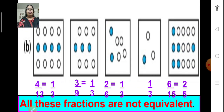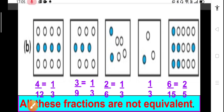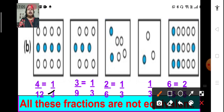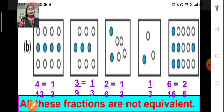Here, in the first figure, 4 out of 12 balls are shaded, so the fraction is 4 upon 12, which means it is 1 upon 3. In the next one, 3 are shaded out of 9, so 3 upon 9, again it is 1 upon 3. In the third one, 2 out of 6 are shaded, 2 upon 6, and the fraction in lowest form will be 1 upon 3. Here we can see that 1 is shaded out of 3, so the fraction is 1 upon 3. And in the last one, it is 6 out of 15, that means 6 upon 15, and the fraction is 2 upon 5 in lowest terms. So, all the fractions here are not equal — they are not equivalent; they do not represent the same part of the whole.